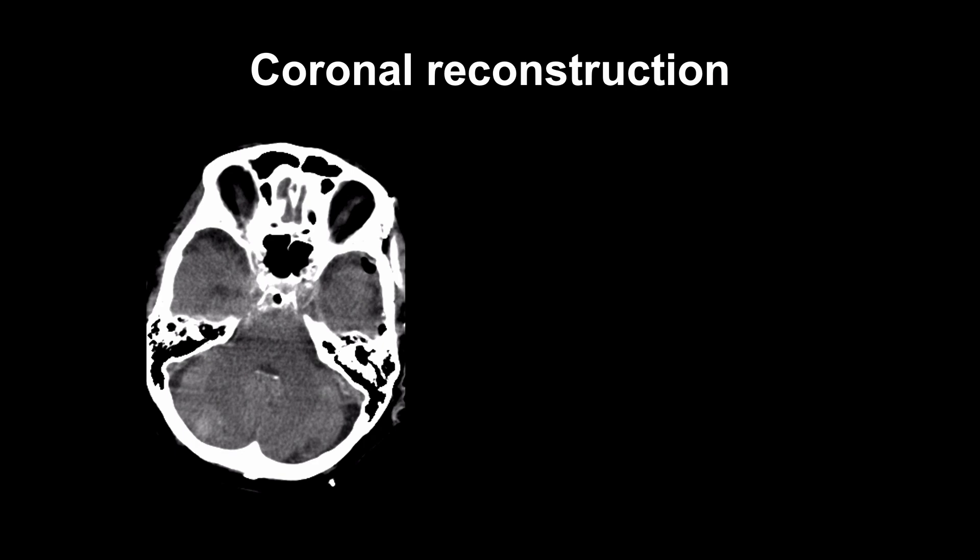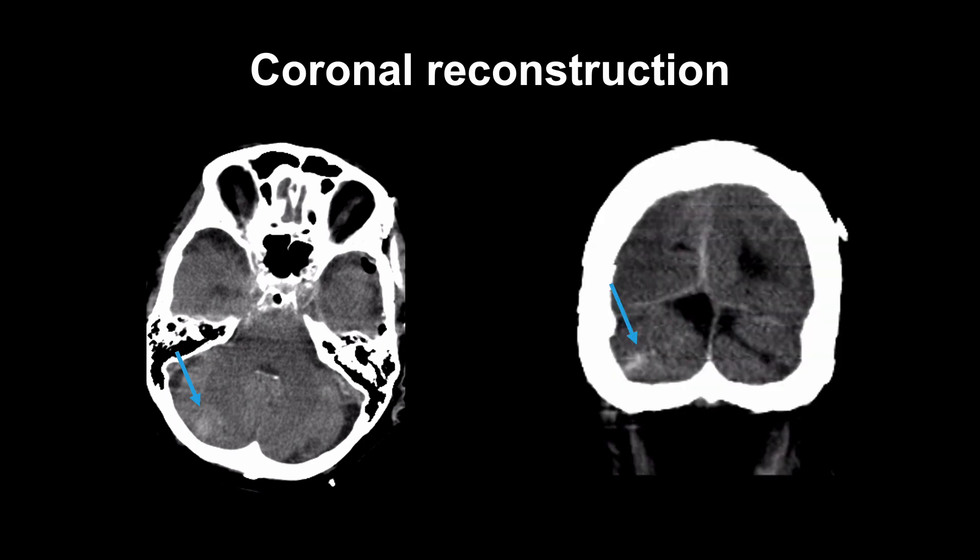We always view CT on axial images, but in patients with suspected trauma or subarachnoid hemorrhage, reconstructions in coronal and sagittal views can be very helpful for the detection of the hemorrhage as well as assigning it to the correct compartment. In this case, the high attenuation evident on CT in the right cerebellar hemisphere could be parenchymal, but its location in the subarachnoid space is much easier to establish when the scan is displayed as a coronal reconstruction.